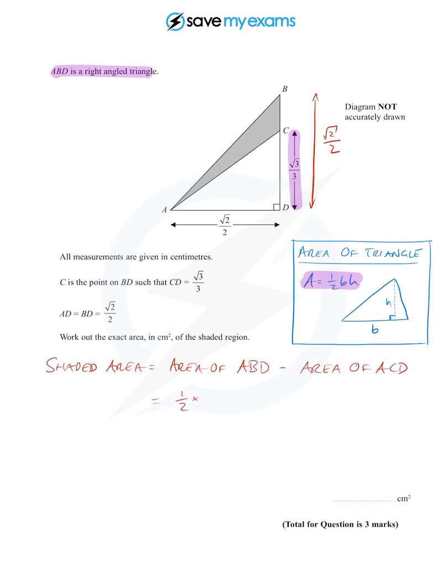So that's a half of—right, for the bigger triangle, there's the base and there's the height. In fact, they're the same, aren't they? So that's a half of root two over two times root two over two.